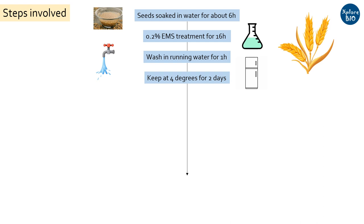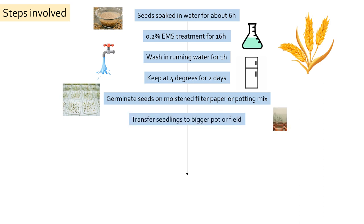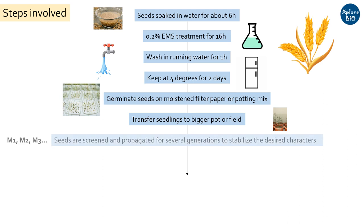It is essential to optimize the concentration of EMS, as higher concentration may result in higher seed lethality. Treated seeds are germinated on moistened filter paper or potting mix, which are then checked for the number of surviving plants. Seedling survival rate is determined 21 days after sowing. Survived seedlings are transferred to bigger pots or the field to harvest the next generation of seeds. Seeds that survive should be propagated using a single spike for subsequent generations, termed as mutant 2, mutant 3, and so on.